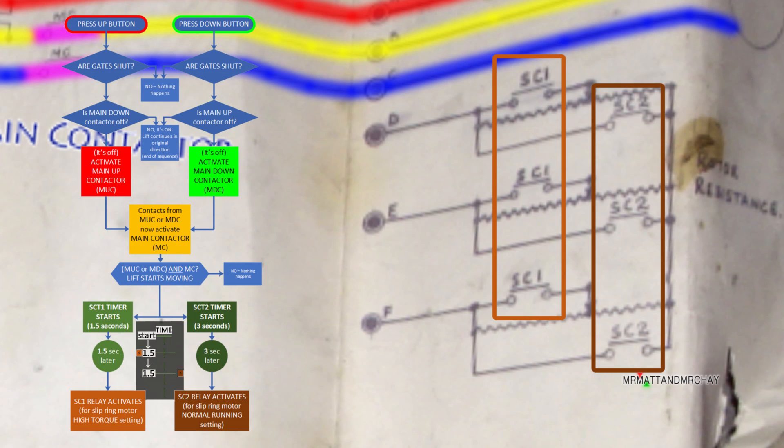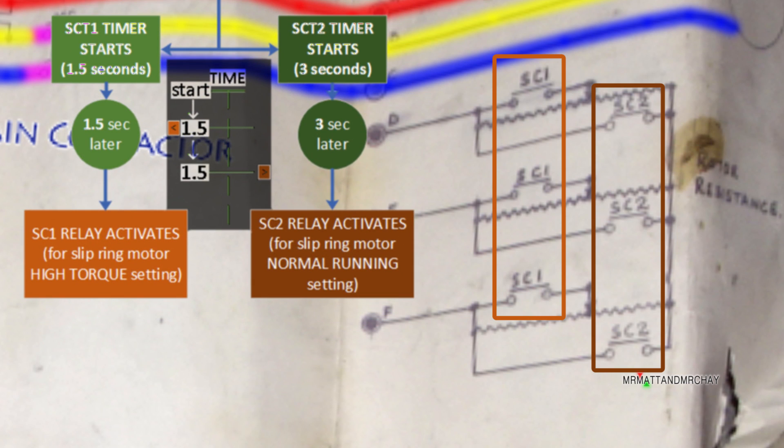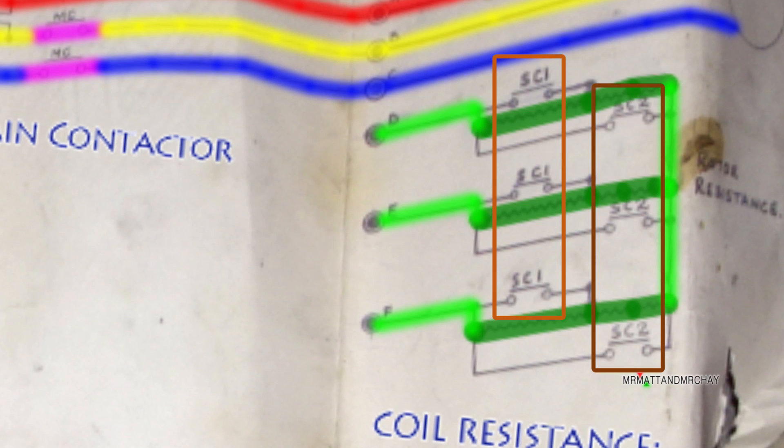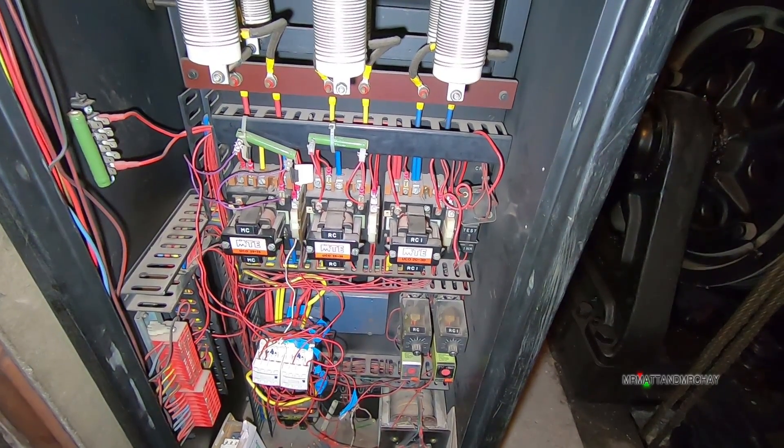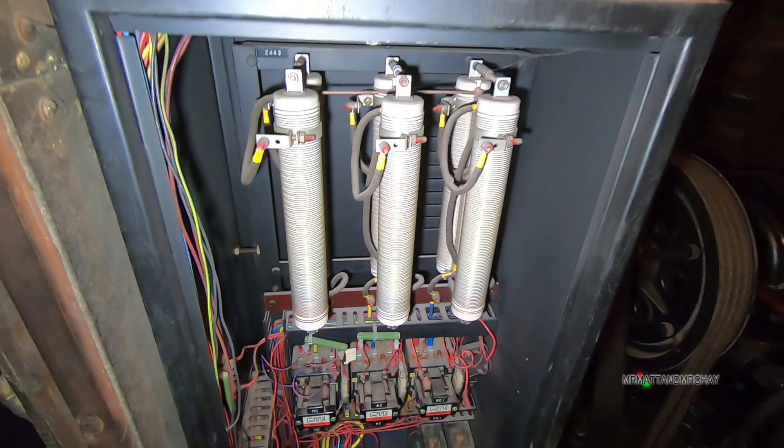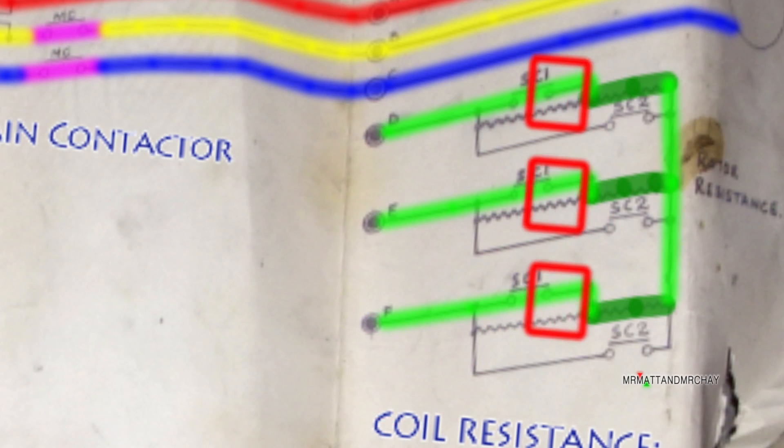If you remember, these are both linked to timers and both delayed by one and a half seconds each when the motor received power, connecting D, E and F together, but via three separate resistors. After one and a half seconds, SC1 activates. These can be adjusted to provide more or less resistance for fine tuning by moving these rings up or down. This configuration creates the torque advantage to get the motor up and running.